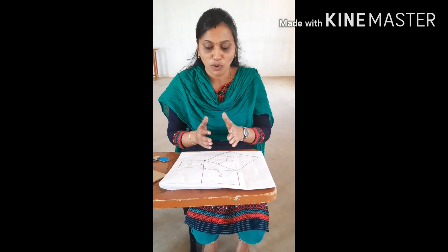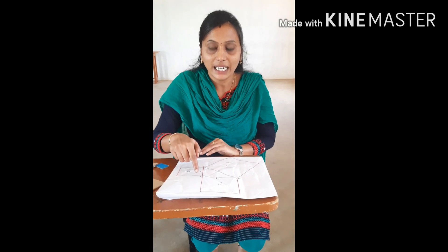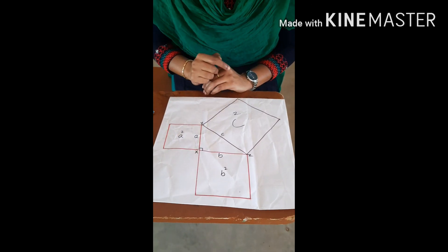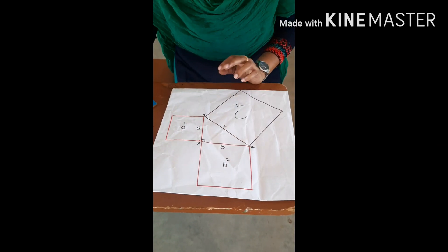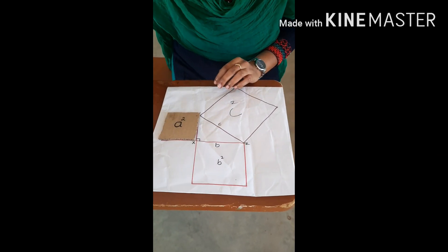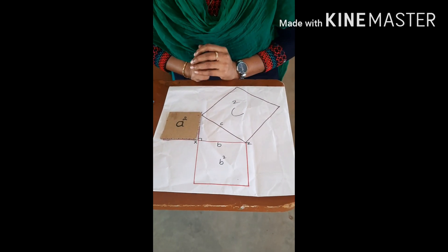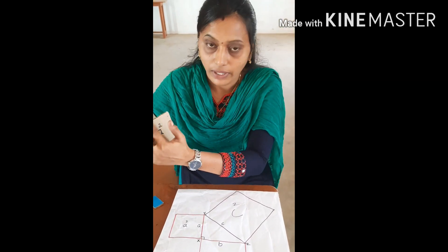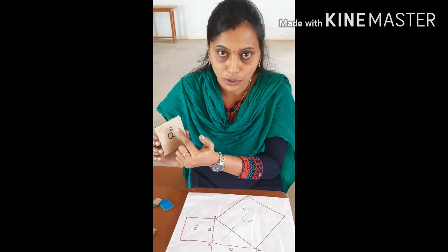Now I have a small demonstration on Pythagoras' statement. Here I have a triangle X, Y, Z. For each side I made it as a square shape. So this is a square and this is b square. You might have a doubt why I have written it as a squared. You know what is the area of the square — side into side.